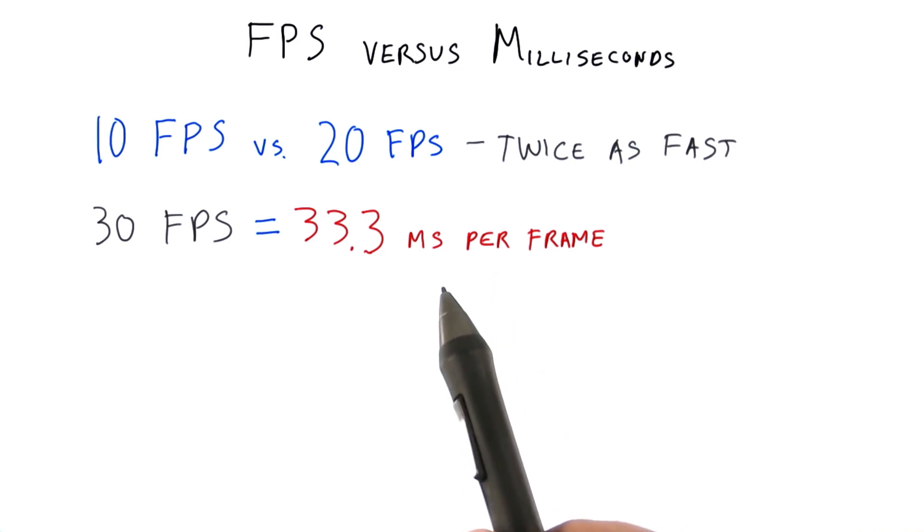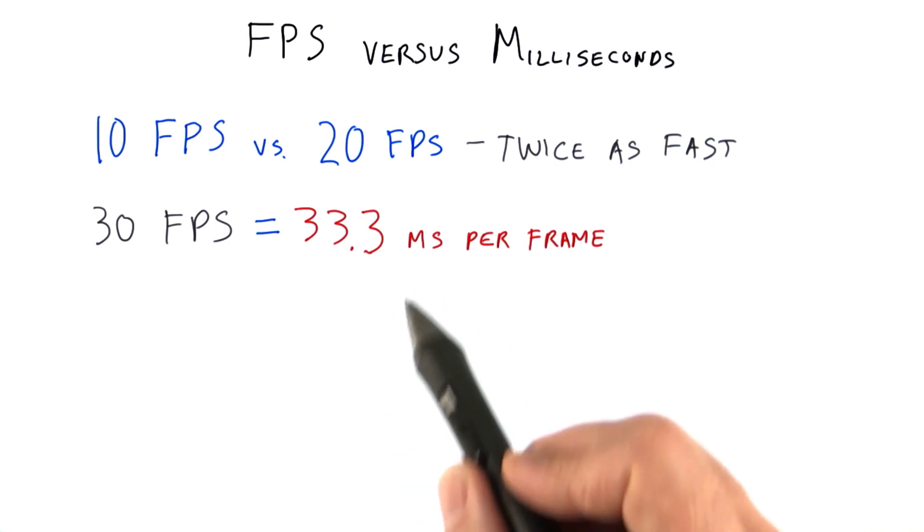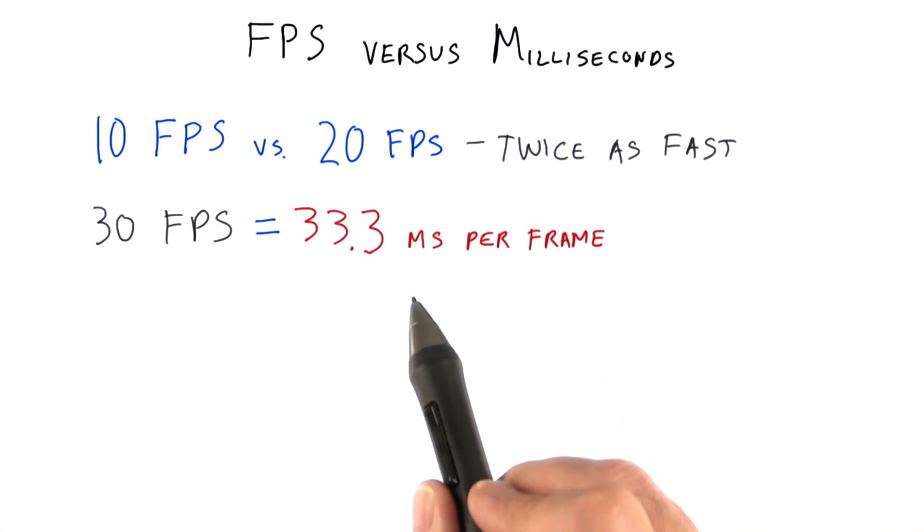Rating individual parts of the rendering process by frames per second doesn't make a lot of sense, since it's the sum of the costs that's important. You can add millisecond costs together to see how much a frame will typically take.